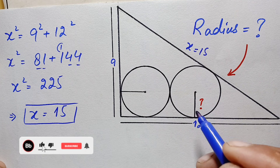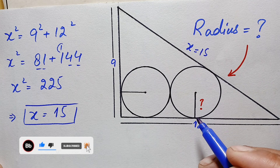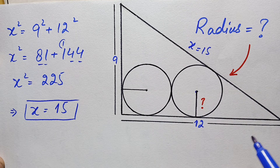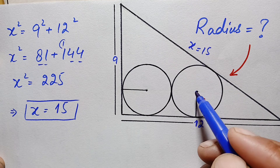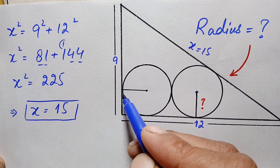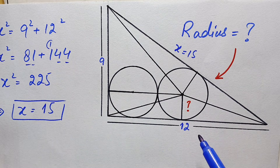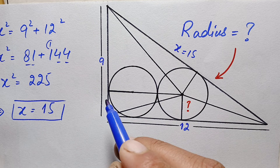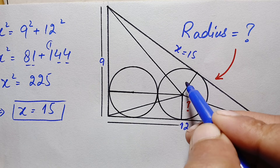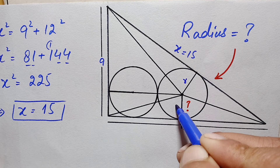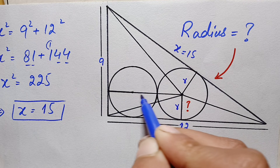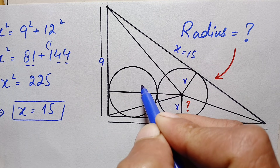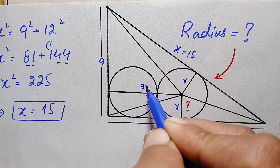Now we will find out the radius of each circle. To do this, we join the center of each circle with the vertices of the triangle as well as the points of tangency. After joining, the radius of each circle is r. The combined segment of the radius of one circle and the diameter of the other gives us 3r.